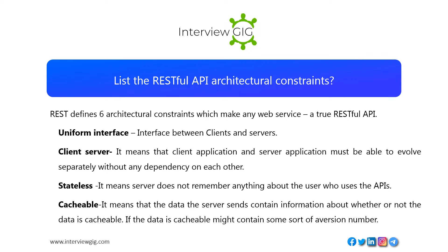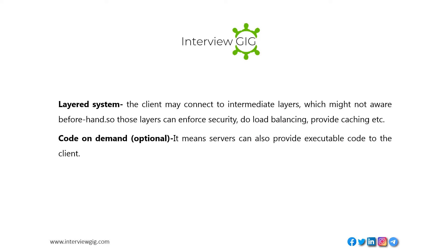Stateless means the server does not remember anything about the user who uses the APIs. Cacheable means that the data the server sends contains information about whether or not the data is cacheable. Layered system means the client may connect to intermediate layers which might not be aware beforehand, so those layers can enforce security, do load balancing, provide caching, etc. Code on demand (optional) means servers can also provide executable code to the client.